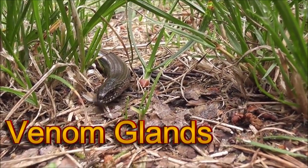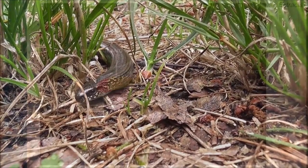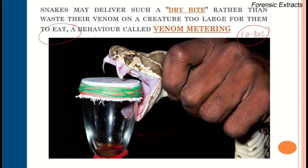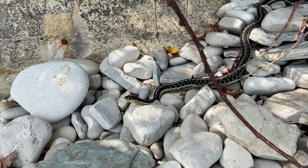This is the basic anatomy of the venom gland — they are modified salivary glands. In the photograph you can see the venom gland surrounded by the compressor muscle, with a primary venom duct, accessory gland, and secondary venom duct that opens into the fang, which is surrounded by the fang sheath.